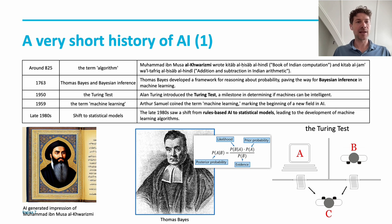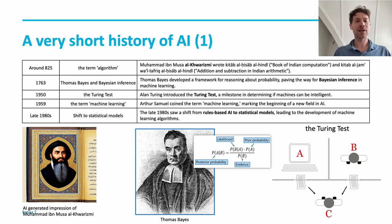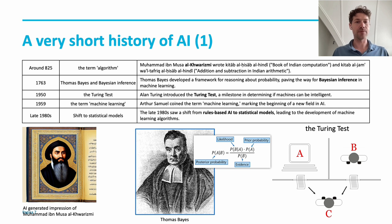Continuing our timeline: in 1763 we get to Thomas Bayes, who introduced the ideas of Bayesian inference. The key formula shows that given a prior belief about the current state, if you make an observation you can update that belief — that's a way of learning which is probably the basis for how both humans and machines learn. A really important step came around the 1950s with Alan Turing, who introduced the Turing test, where a person needs to find out whether the agent they're interacting with is a computer or a human.